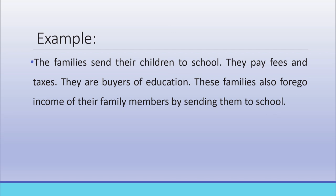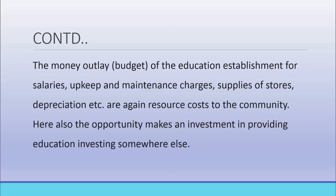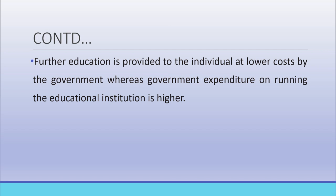The first type of expenditure is a direct cost to the families, and the latter type is called an opportunity cost. The money outlay of the education establishment for salaries, upkeep and maintenance charges, supplies of stores, depreciation, etc., are a resource cost to the community. Here also, the opportunity cost represents investing in education rather than investing somewhere else. Furthermore, education is provided to individuals at very low cost by the government, whereas government expenditure on running educational institutions is higher.